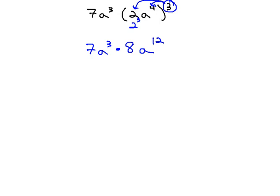After doing the exponents, order of operations tells us to do the multiplication and division. We are now ready to multiply. 7 times 8 is 56, and on the a's, when we have 2 a's multiplied together, we will add the exponents, 3 plus 12, to get 15.